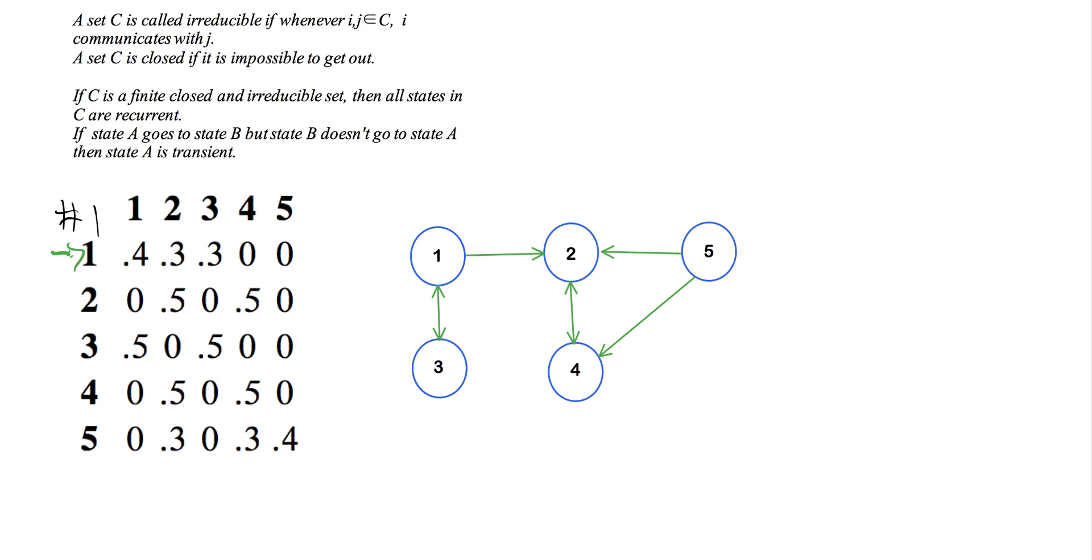One can go back to state one, but I just didn't draw these arrows, because it really isn't necessary for us to think about the fact that if we're in one, there are three different possibilities: we can either stay in one, we can go to state two, or we go to state three. There's zero probability of getting to state four or five. So that's why there's no arrows to four and five.